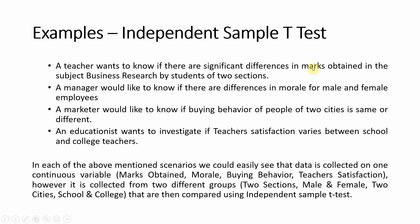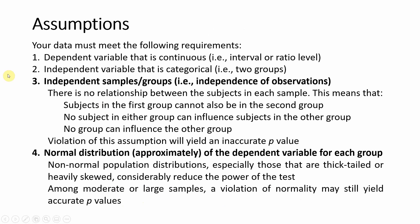The independent sample t-test is used to compare a continuous dependent variable between two categories, which are referred to as the independent variable. In each scenario the data is collected on one continuous variable — marks, morale, buying behavior, or teacher satisfaction — but from two different groups such as two sections, male or female, two cities, or school versus college.